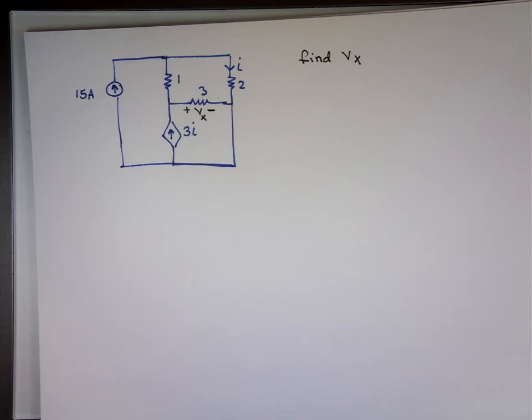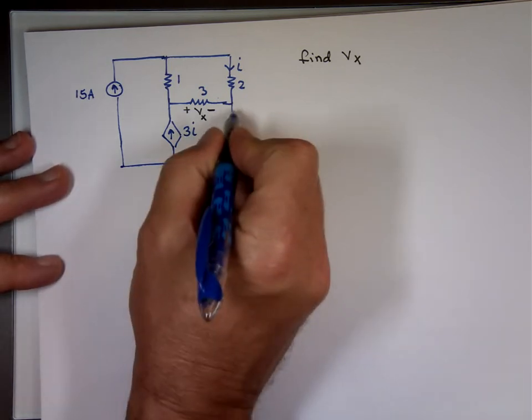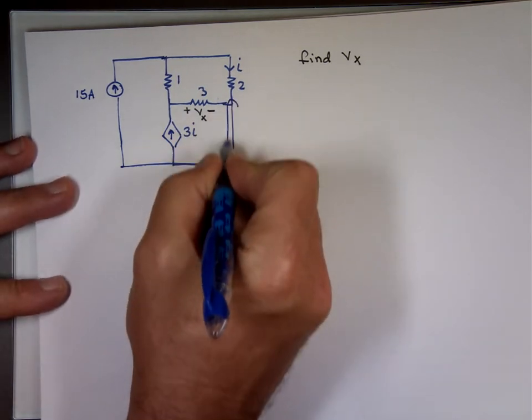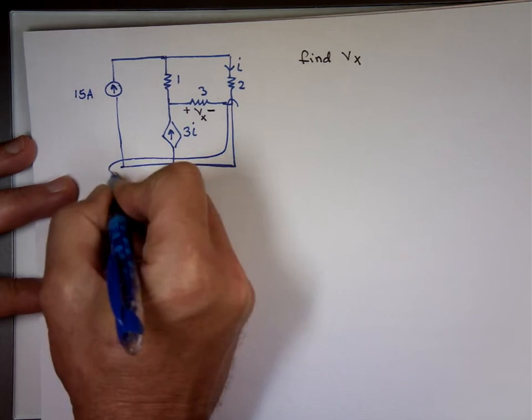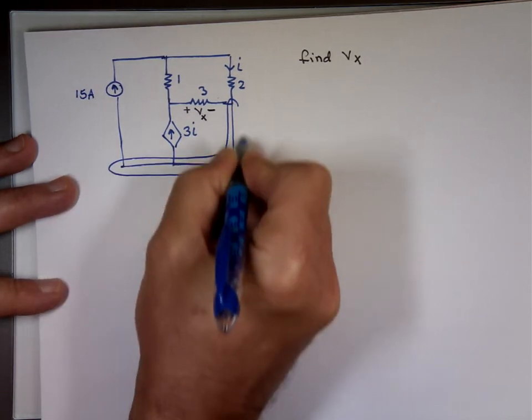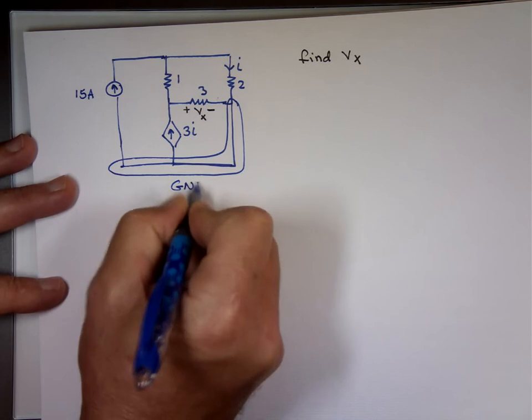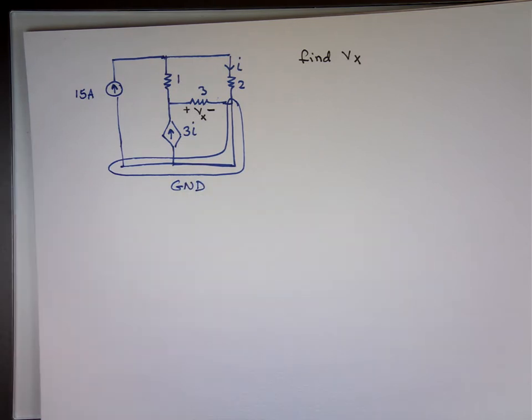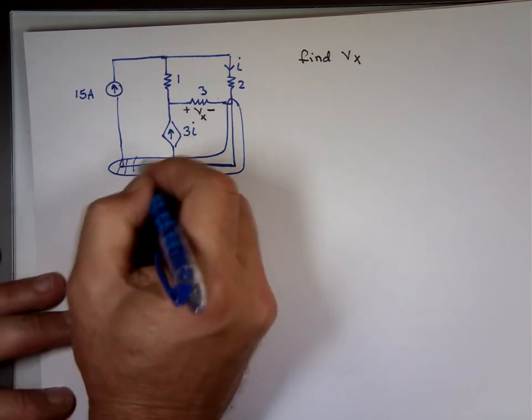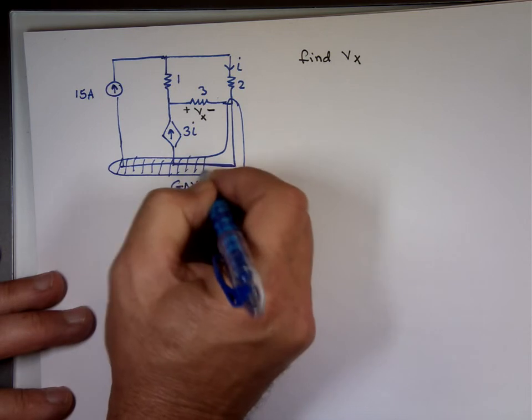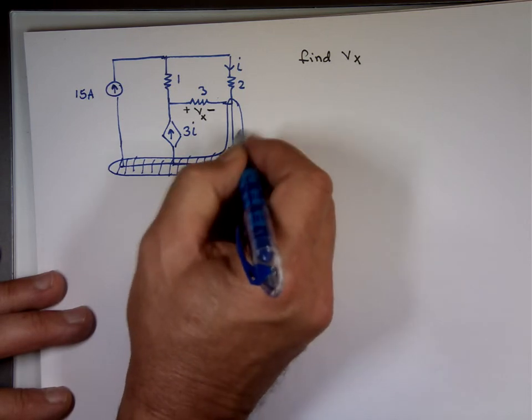So when I look at that, not counting the ground, because there's one node that's the ground, that's this node. All of this connected together. This is your ground. Not counting that node. So all of this is the ground. If you don't count that node, how many nodes do you see left there?